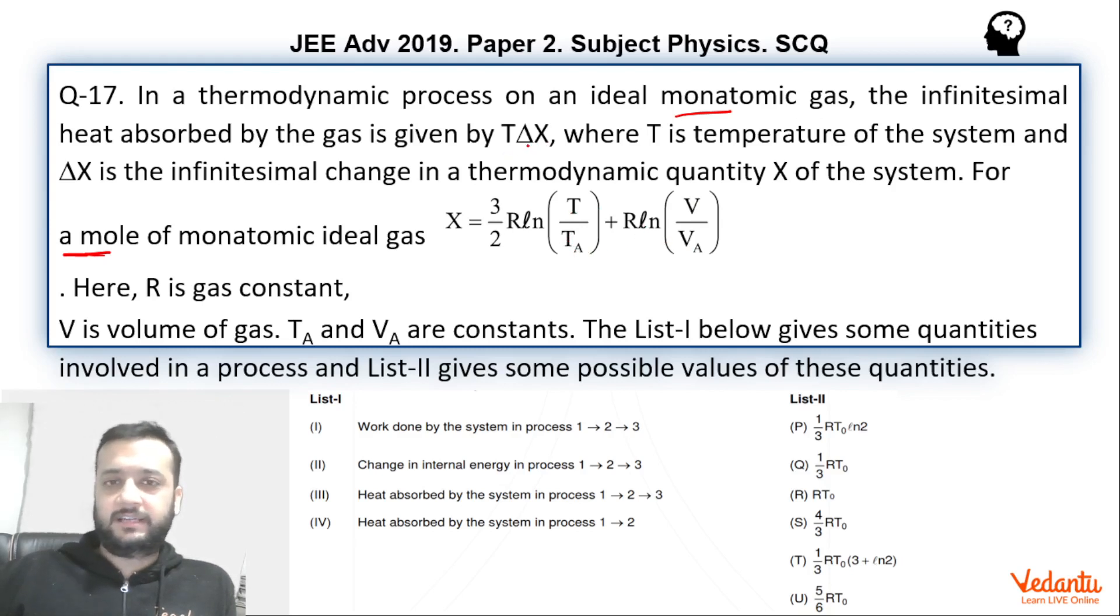So in the question it is said that delta X is nothing but dX. You don't have to think that it's a large change in X, actually it's dX. It's written also, delta X is the infinitesimal change. So they are saying that when you give very small amount of heat to the system, then that heat is actually T delta X. So basically in the question it is given that dQ is nothing but T dX.